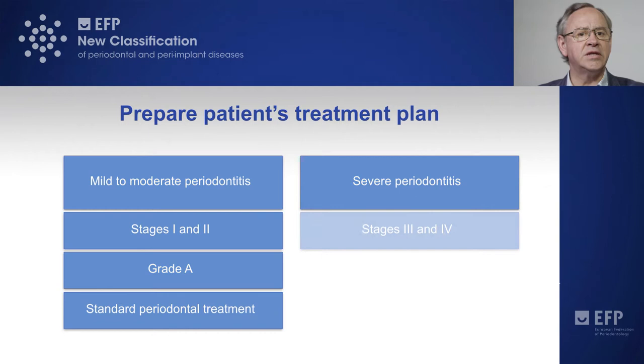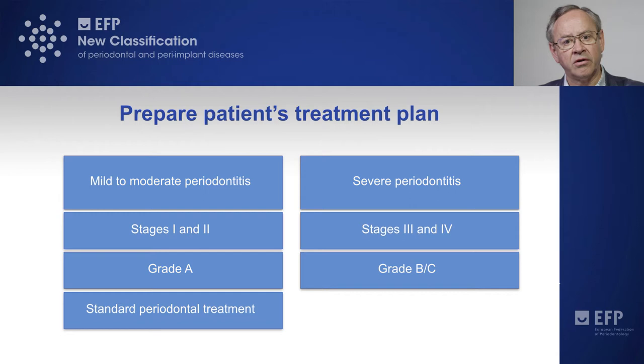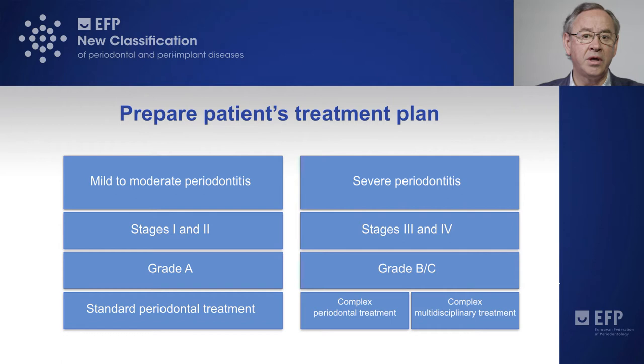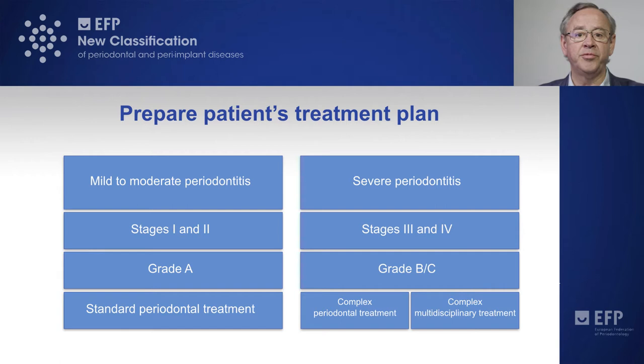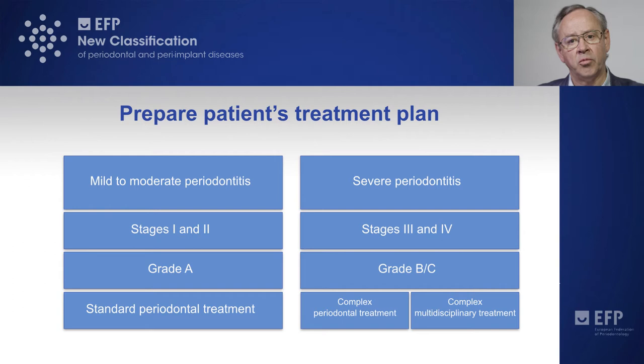However, when we have severe periodontitis — stages three and four — mostly when the patient is either grade B or C, we will need to do complex periodontal therapy. Particularly in stage four, we will need complex multidisciplinary treatment, because we not only have to address the periodontitis itself but also deal with the functional sequelae of severe periodontitis when the patient has lost more than four teeth.